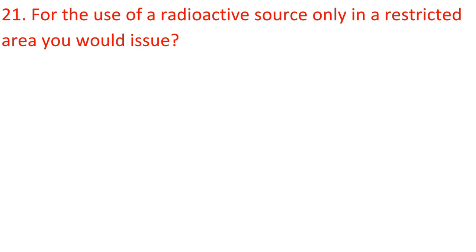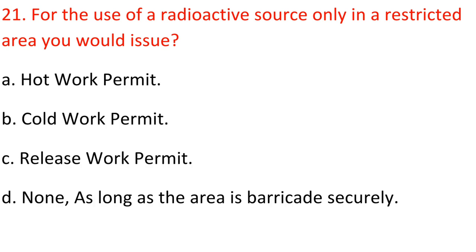Question 21: For the use of a radioactive source only in a restricted area, you would issue — A) Hot work permit, B) Cold work permit, C) Release work permit, D) None, as long as the area is securely barricaded. Answer: A) Hot work permit.